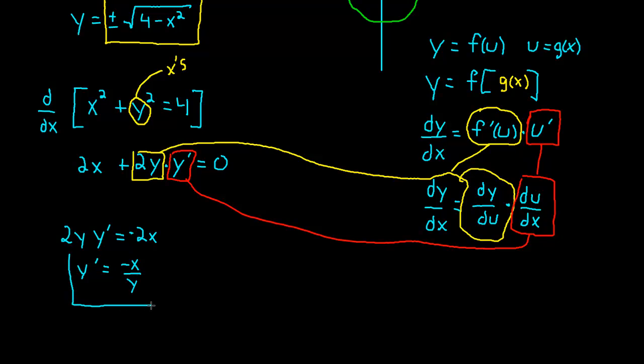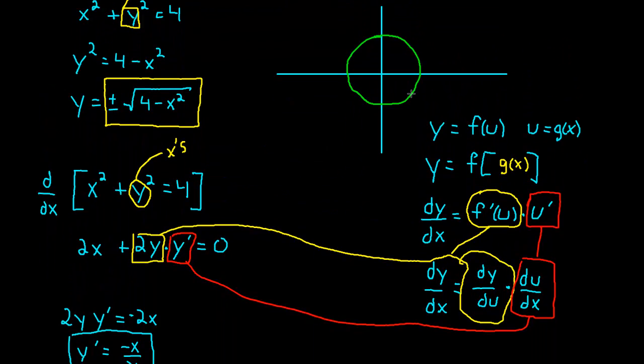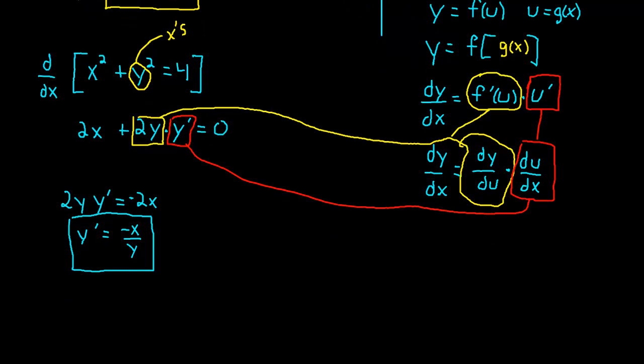And this is our derivative. Now, notice this is also an implicit equation. We have x's and we have y's here. But we could get to the same results using this derivative as we would get to as if we differentiated both of these functions with respect to x. We would get the same critical points, we would get the same results. Implicit differentiation just gets us there a little bit quicker.